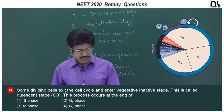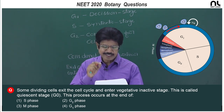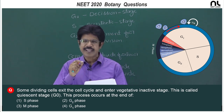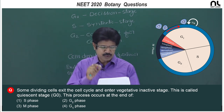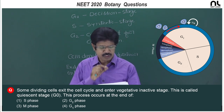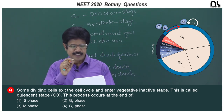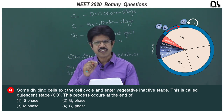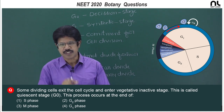In this question: some dividing cells exit the cell cycle and enter a vegetative inactive stage. This is called the quiescent stage, G naught. This definition is given in the question with regard to G naught.